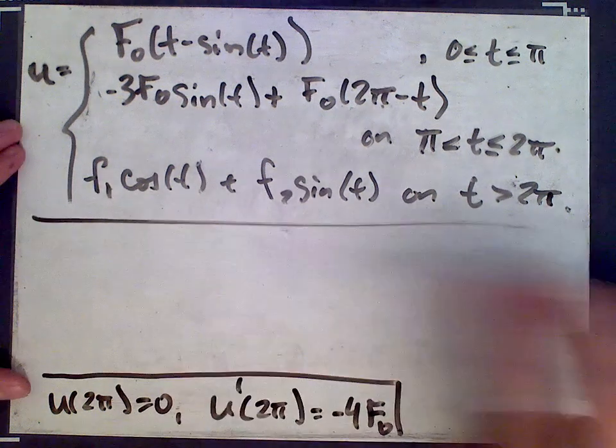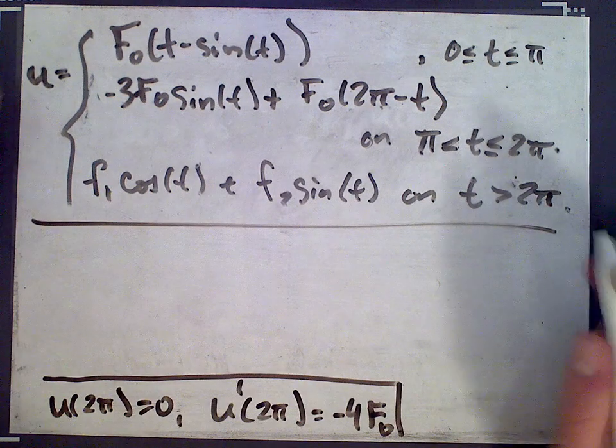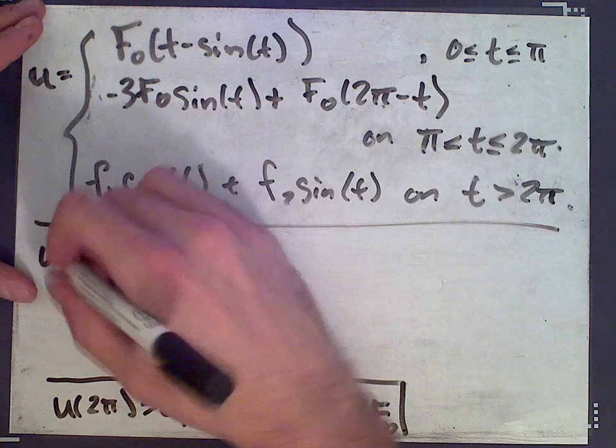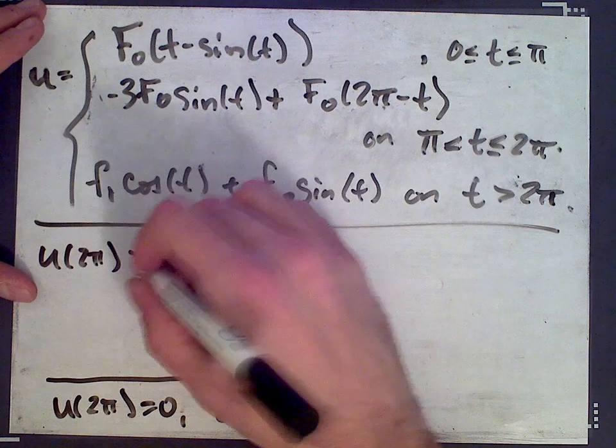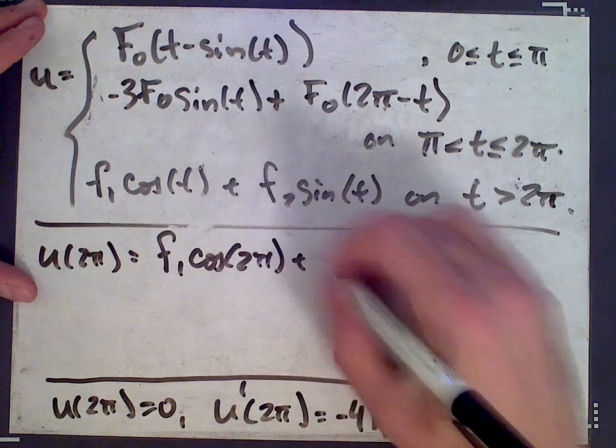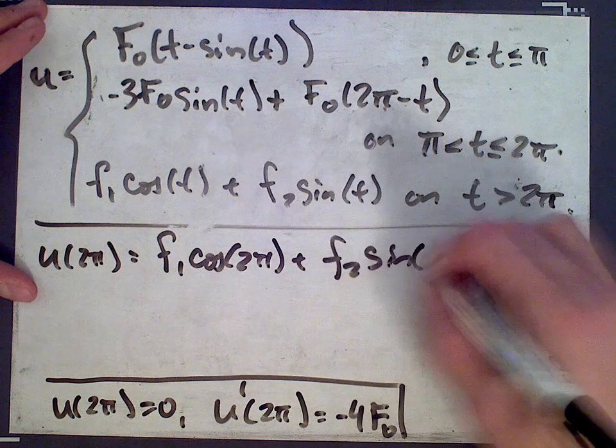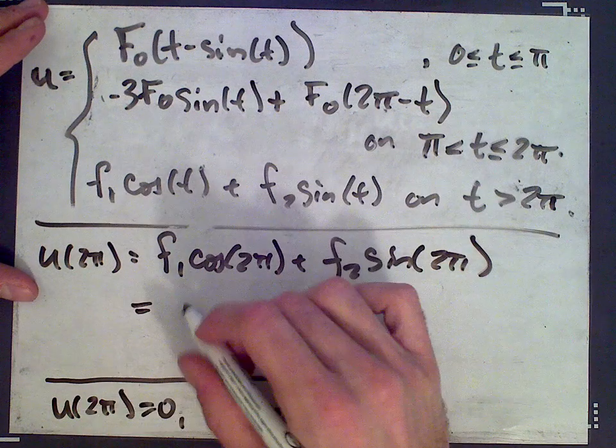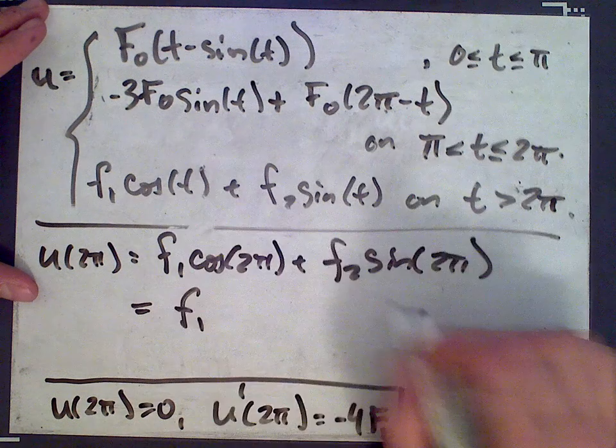Okay, so we have that. So let's plug 2π into our last formula here, so we get u of 2π is f1 cos 2π plus f2 sine 2π, which is f1.